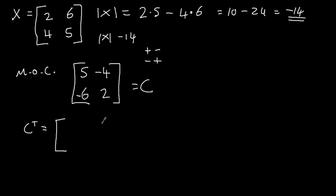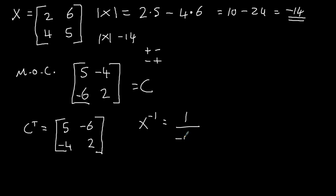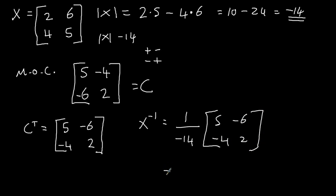To find the adjugate, which is the transpose of C, we take the first column and make it the first row: five, minus six; then the second column becomes the second row: minus four, two. That is the adjugate. The inverse X to the minus one is one over the determinant — one over minus fourteen — times the adjugate: five, minus six, minus four, two.